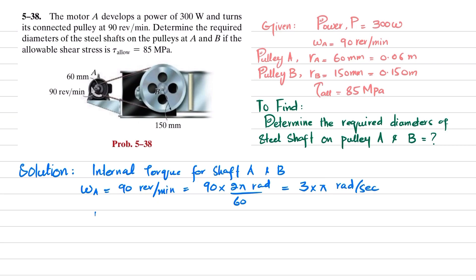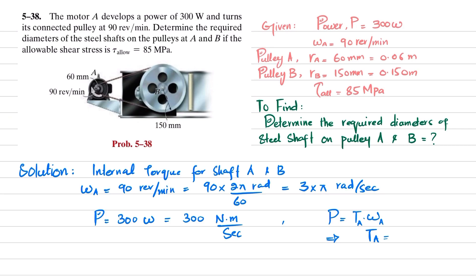Power is given as 300 watts, which equals newtons times meters per second. We know that power equals torque times omega, so torque_a equals power divided by omega_a. Therefore, torque_a equals 300 divided by 3π, which gives 31.83 newton-meters.